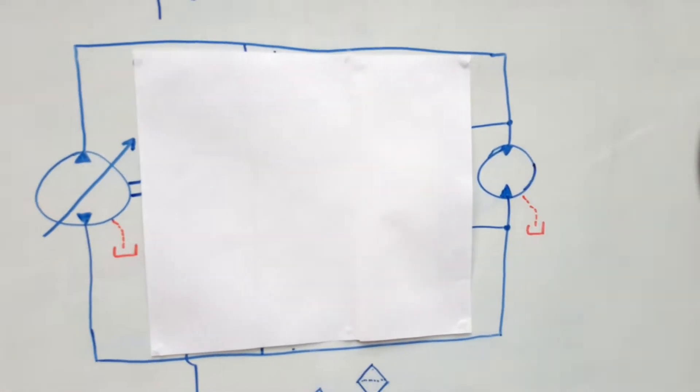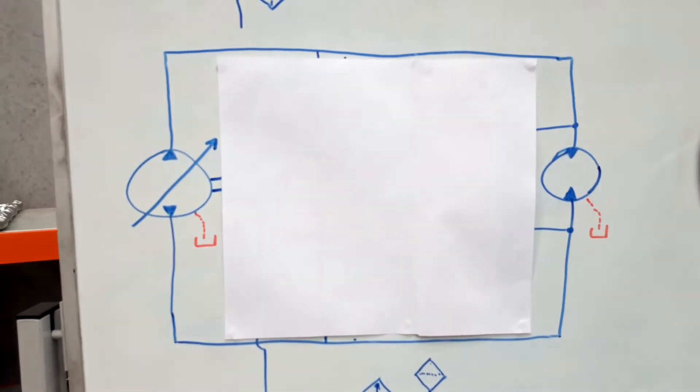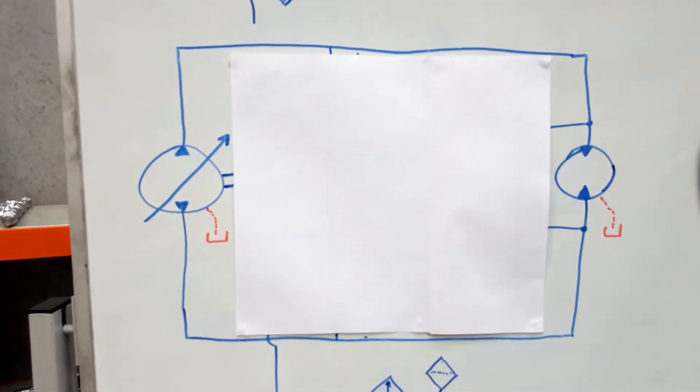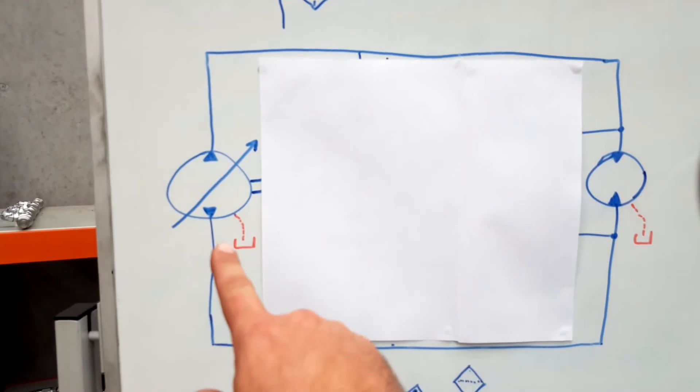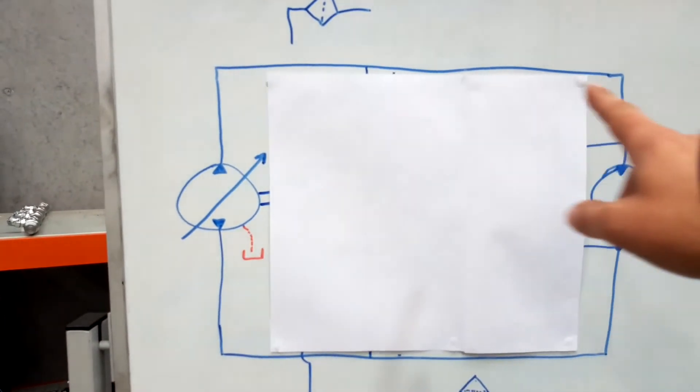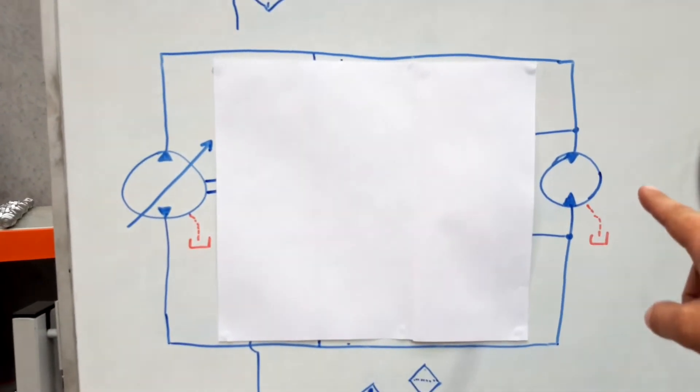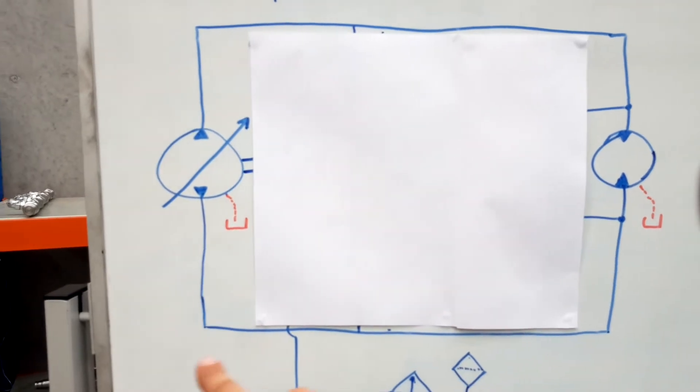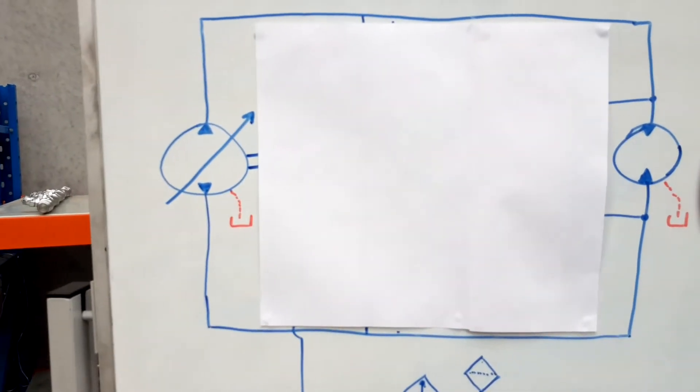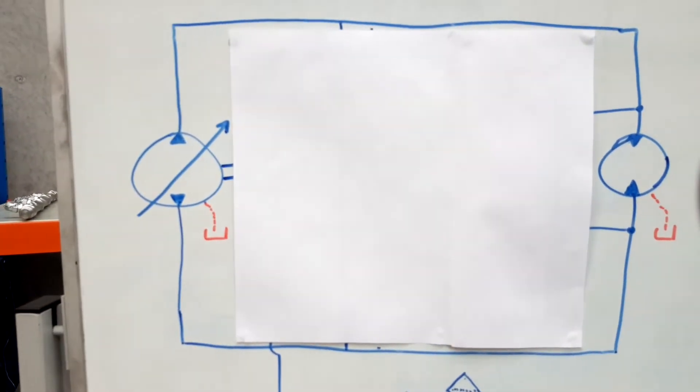Here we have a basic diagram of a closed loop transmission. The basic premise is that we have a pump, and from the pump we deliver our oil straight to a motor. And from the motor, the return goes back to the pump and it works in a closed loop, just keeps going round and round.